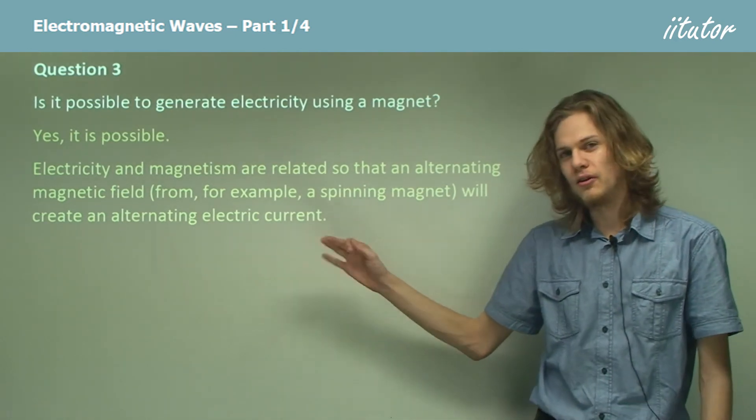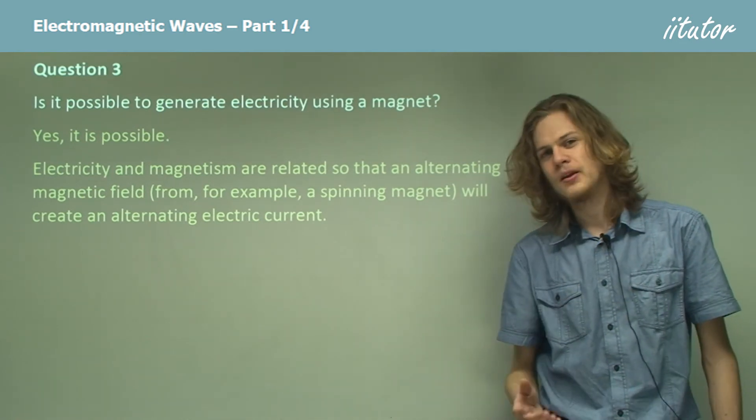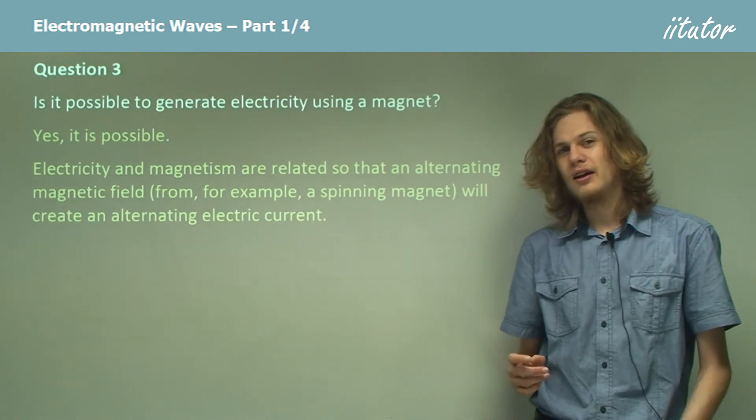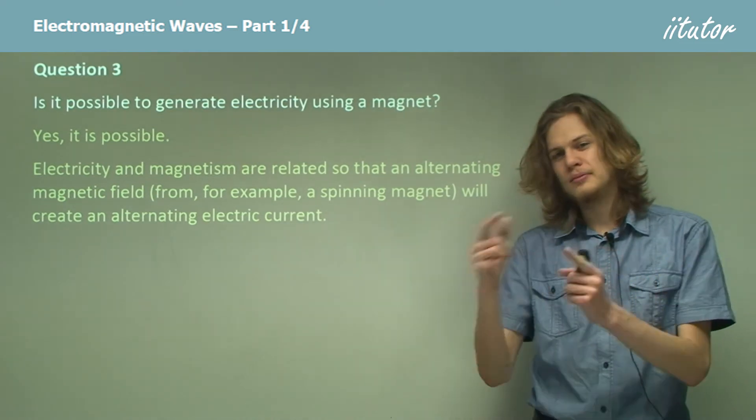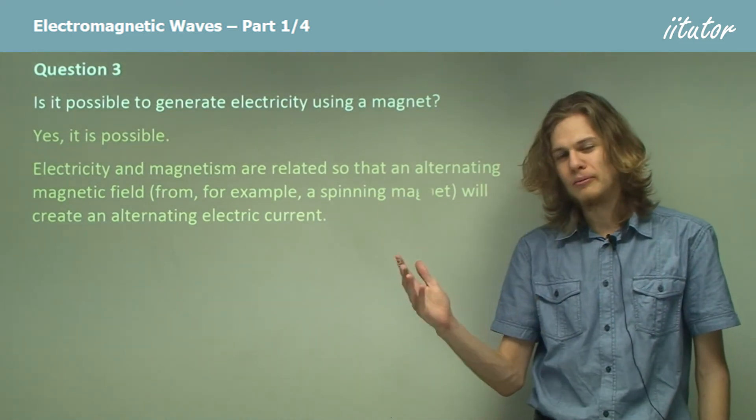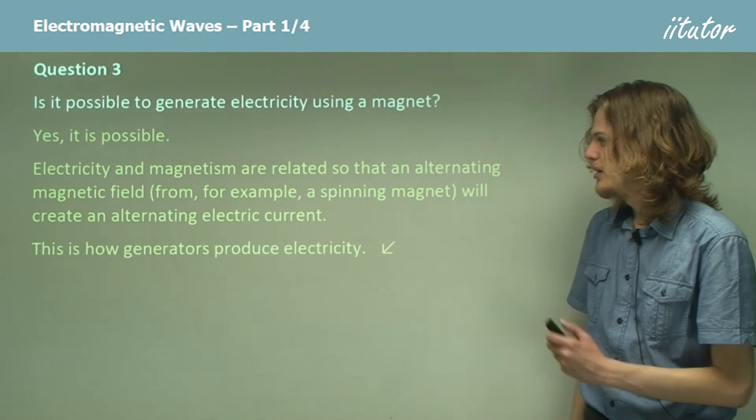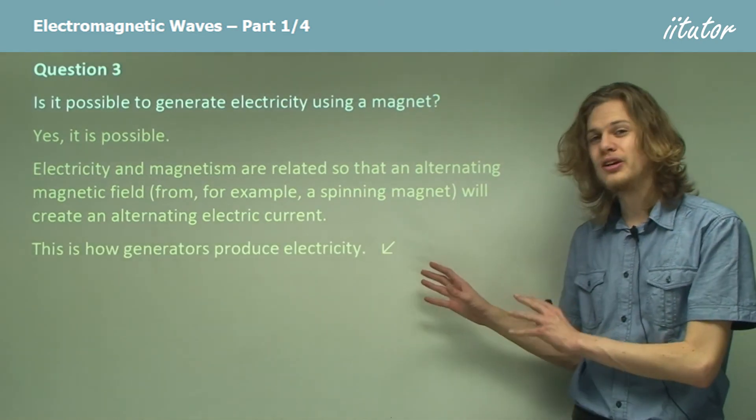That goes positive, negative, positive, negative. So instead of getting an electric current going in one direction, we'll get it moving back and forth. And in fact, this is how generators produce electricity today.